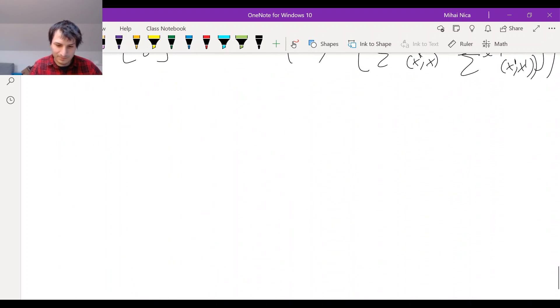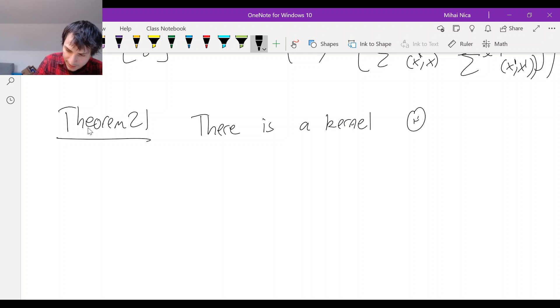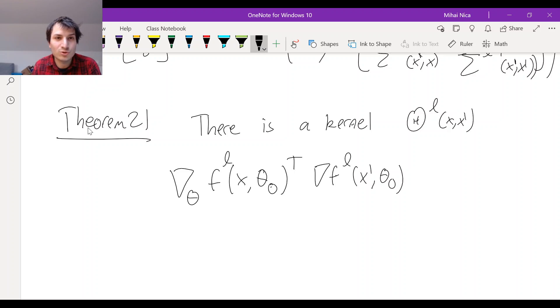So this is theorem 21 in the notes. And it says that there is a kernel. For each layer L, there is a kernel theta L of XX prime. And the following happens: if you look at the Lth layer of the network and you compute its gradient with respect to the weights, and make the matrix by multiplying it by its transpose, then this thing is converging to this Lth layer neural tangent kernel. So the relevant kernel that is driving evolution is this kernel theta L.